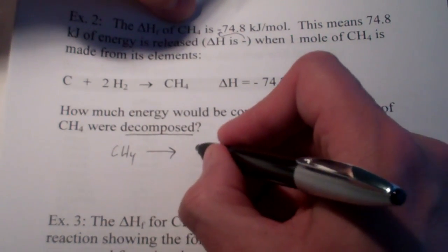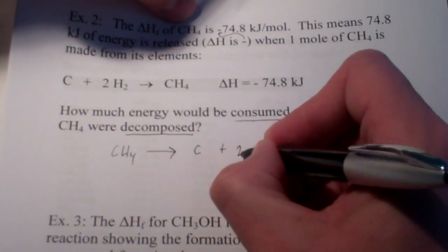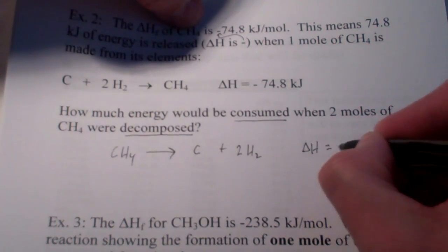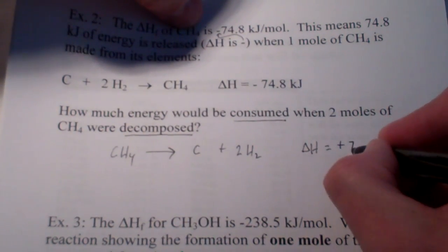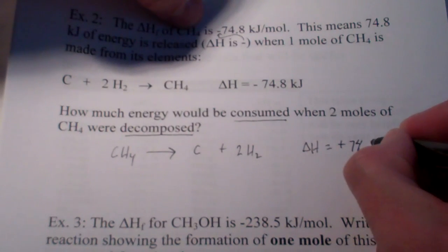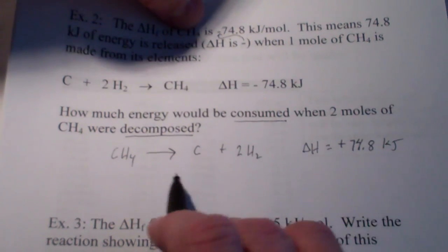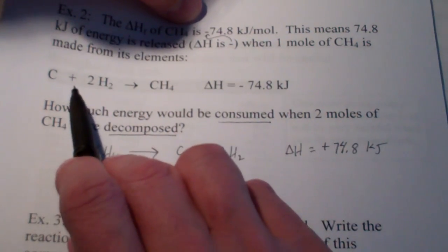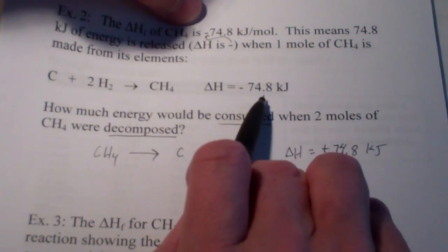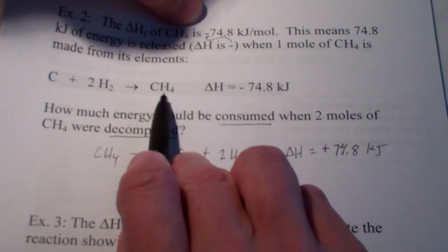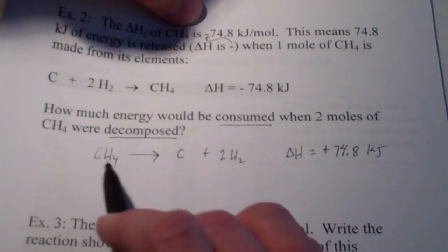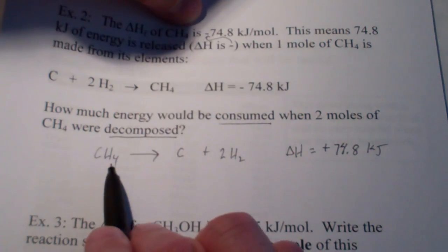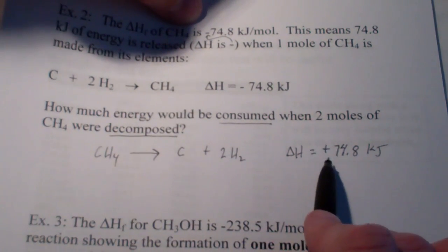You are correct. We would write the one above backwards. So, CH4 would decompose into C and 2 H2s. Now, the heat of that reaction would be a positive 74.8 kilojoules. Why positive? Well, think about the law of conservation of energy. If it gives off 74.8 kilojoules of energy when it's formed, doesn't it make sense that it would consume that same amount of energy when it was decomposed?